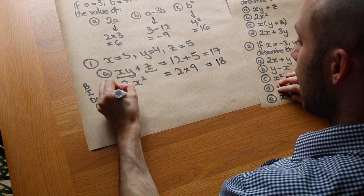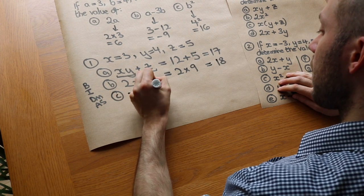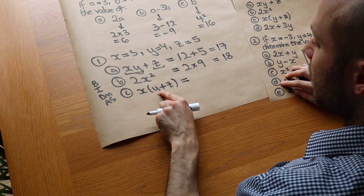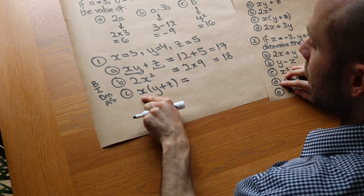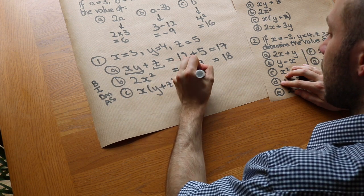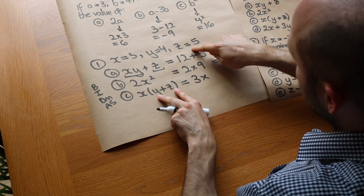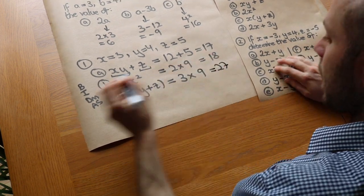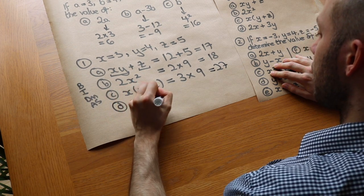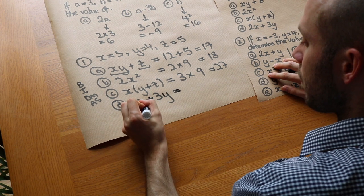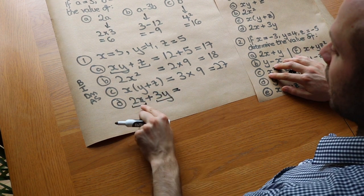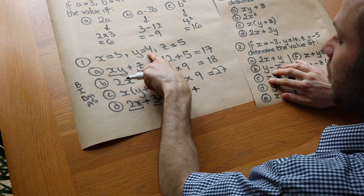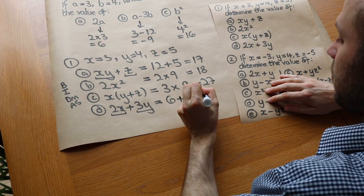Next, we've got x(y plus z). By BIDMAS we do the bracket first: y plus z is 4 plus 5, which is 9, and then we times by x which is 3. So 3 times 9, which is 27. And finally 2x plus 3y: try and do each term in your head and then put the symbols in between. 2x is 2 lots of 3, so that's 6, plus 3y which is 3 times 4, which is 12. And 6 plus 12 is 18.